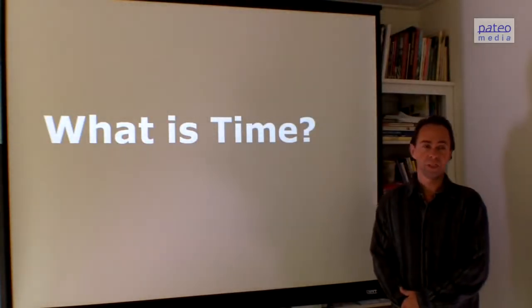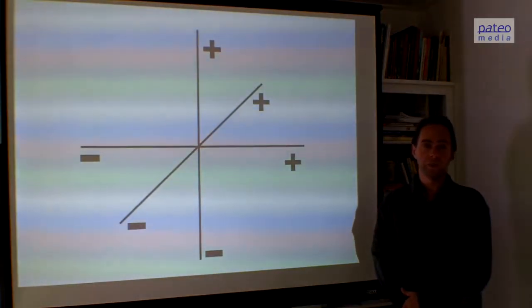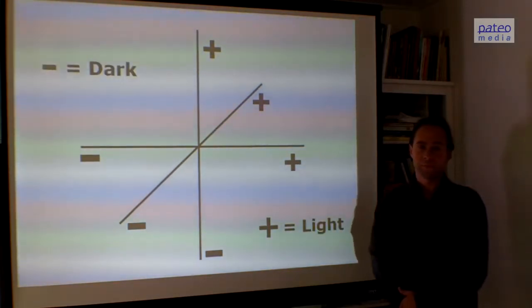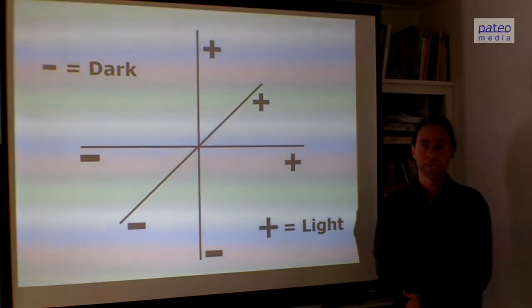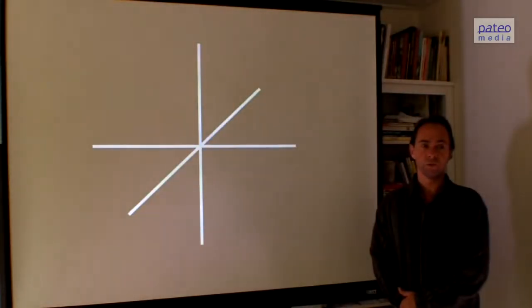Now look at time. Time has exactly the same three dimensions. Also, each dimension has a positive and a negative value. What are those three dimensions? Positive means light and negative means dark.